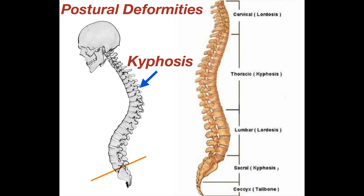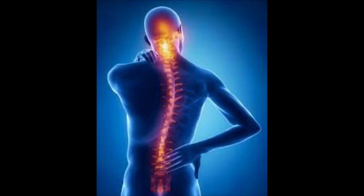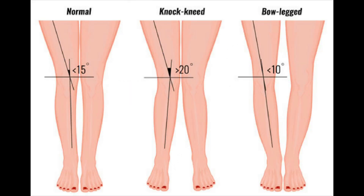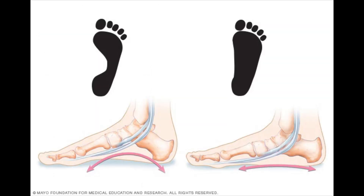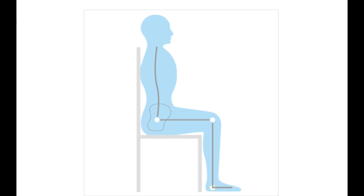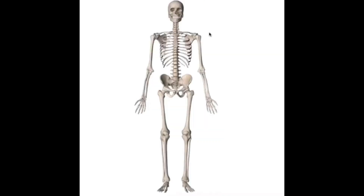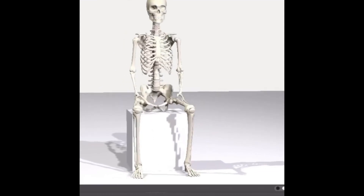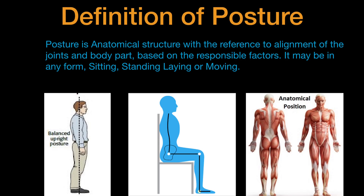Good afternoon. Today I am going to talk on postural deformities. There are three major spinal postural deformities and others at different locations and joints. But before understanding what deformities are, we need to understand what posture is. Posture is understood through different perspectives, but we can explain it based on the guidelines provided by the sciences. The definition of posture is: posture is anatomical structure with reference to alignment of the joints and body parts, and based on responsible factors it may be in the form of sitting, standing, laying, or moving.